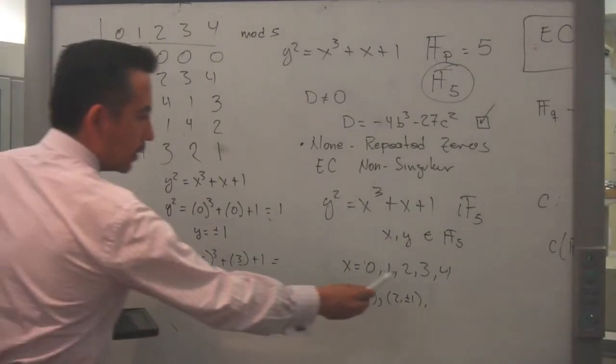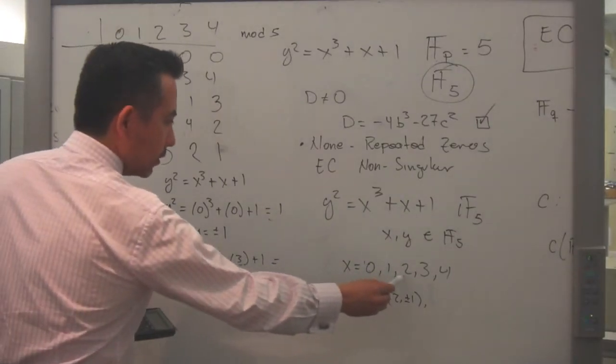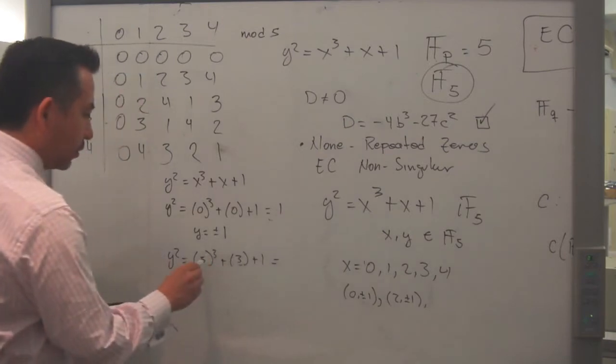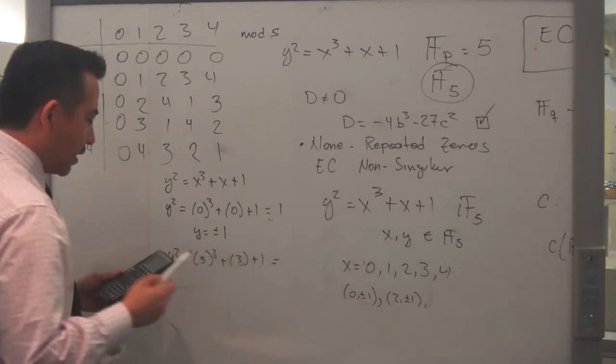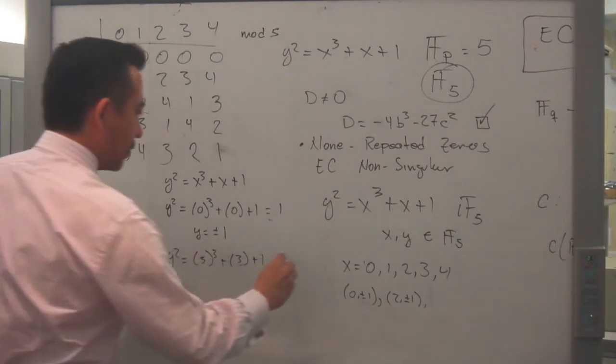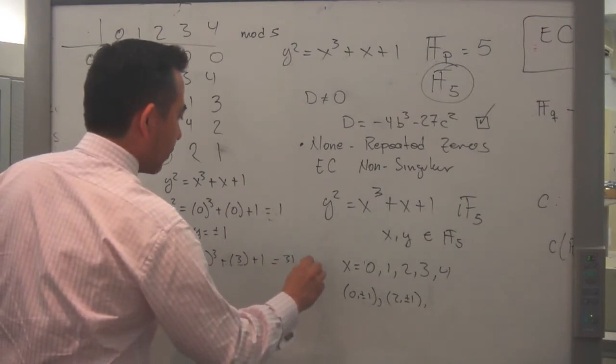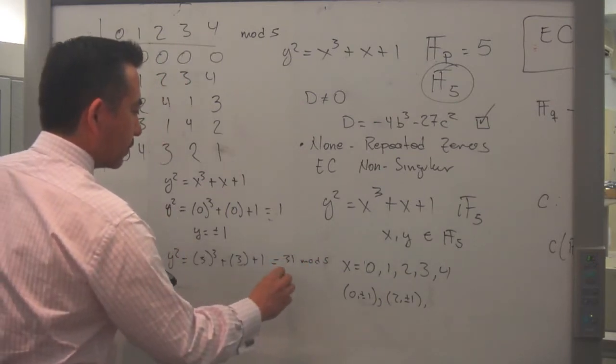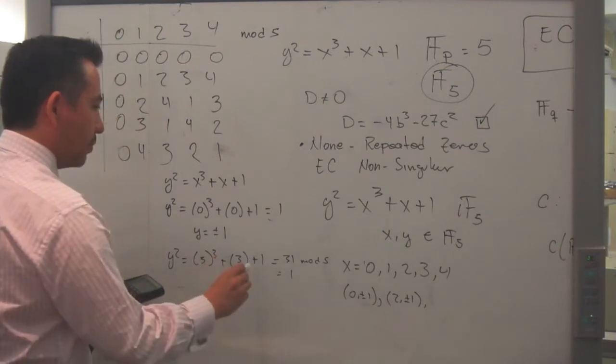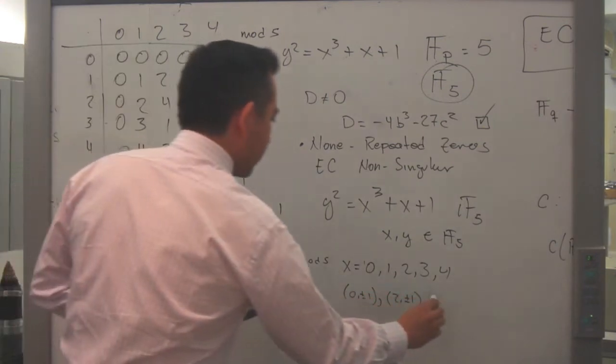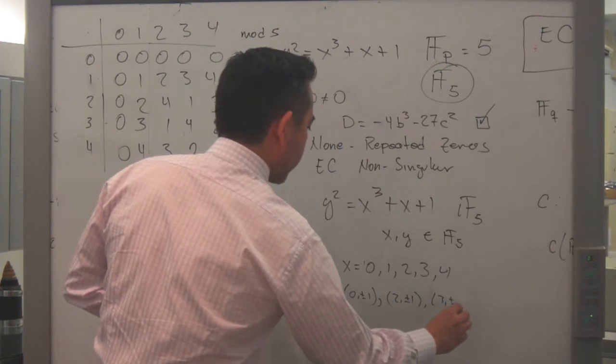All right, so then the next number I will use this one, this one, this one, then is the next number I will use. So this is 3 to the cube plus 3 plus 1, that is 31, 31 mod 5 that's going to be equal to 1. So that means that for 3 I have plus and minus 1.